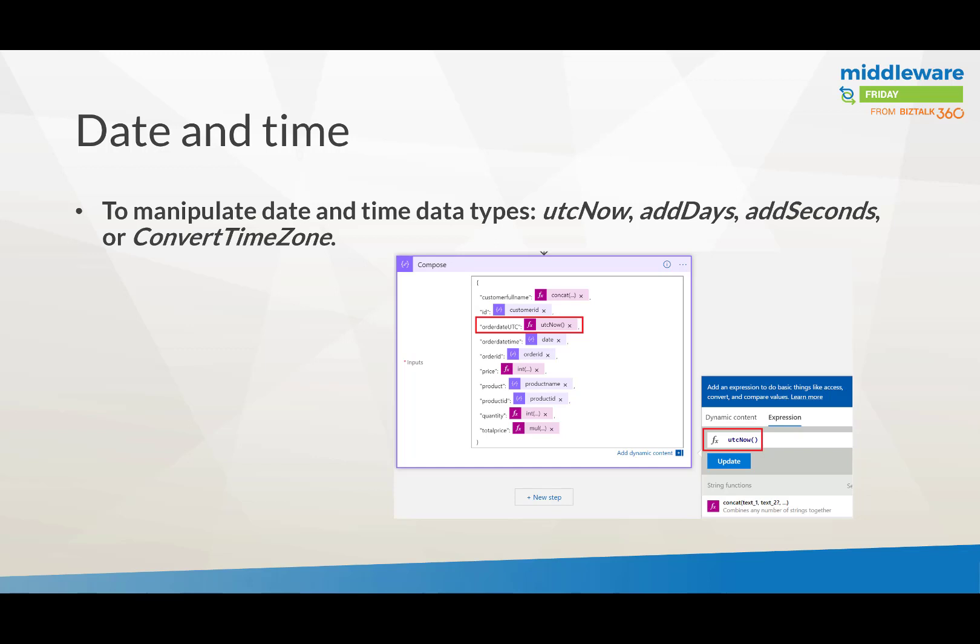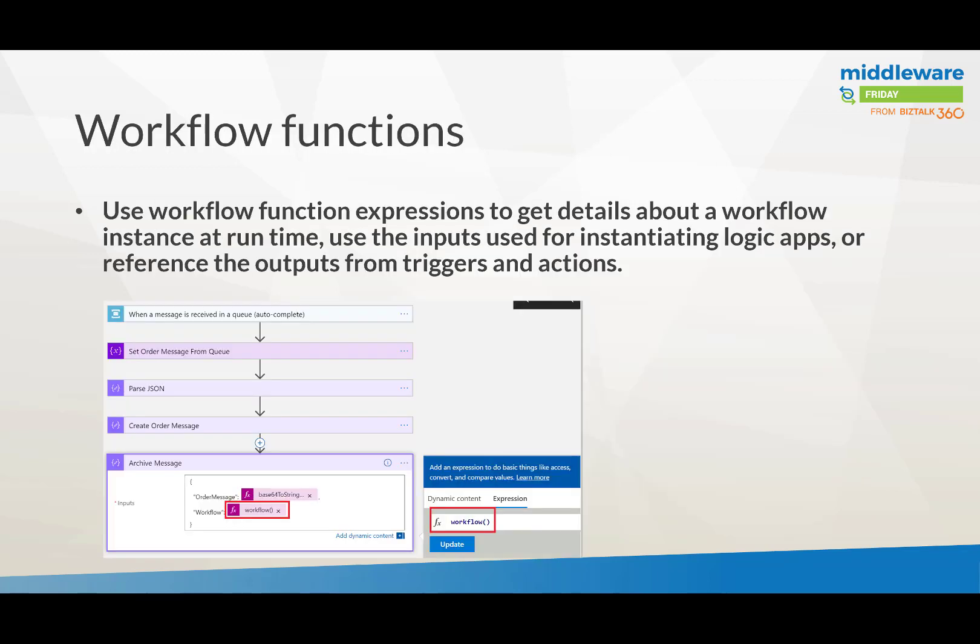You can also work with date and time functions — for instance, converting the order date to UTC if necessary, and adding that to the order message going into a Cosmos DB orders collection. Then there are workflow functions: you can use workflow expressions to get details about the workflow at runtime, reference outputs from triggers and actions, and use them for instantiated Logic Apps.